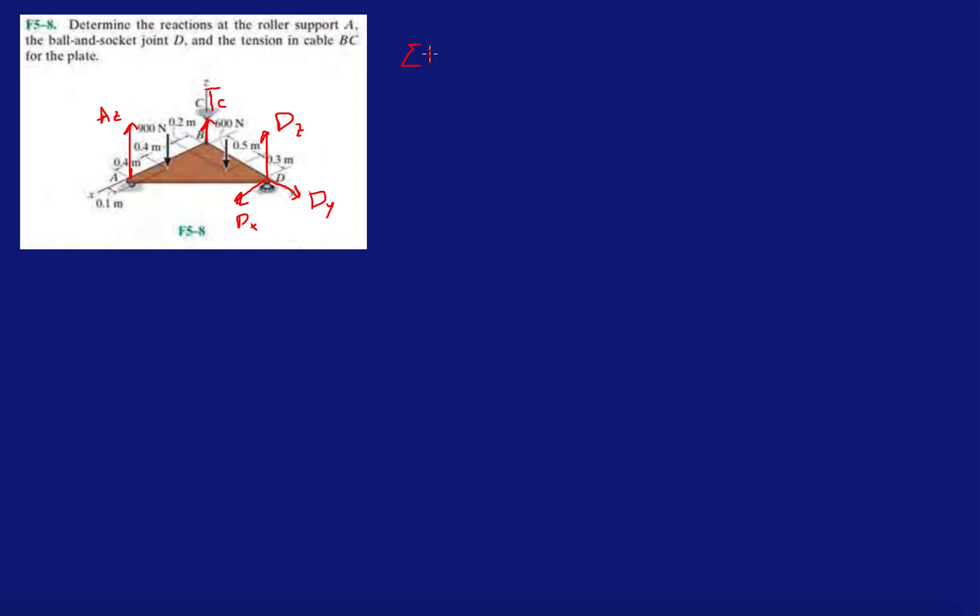So the first thing we'll do is F of X equals zero. Let's do all the forces acting in the X direction. Well, we have DX, and that is it. So DX equals zero. That tells us that DX is zero. So we're done with one of the reaction forces.